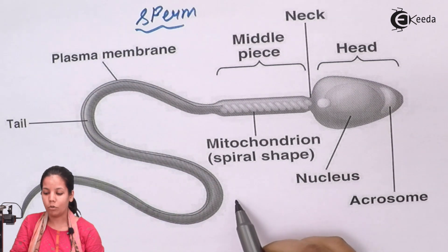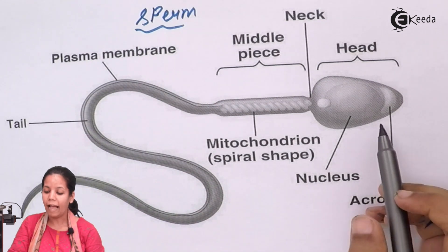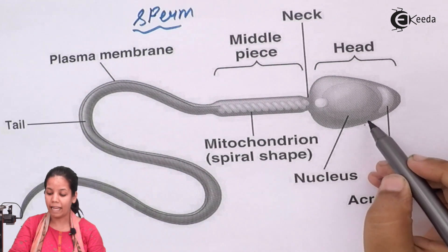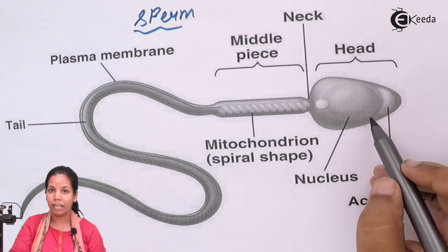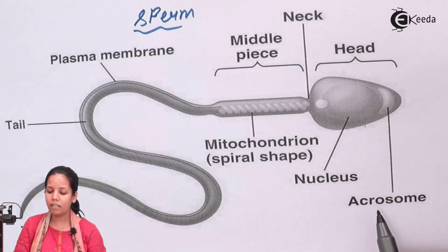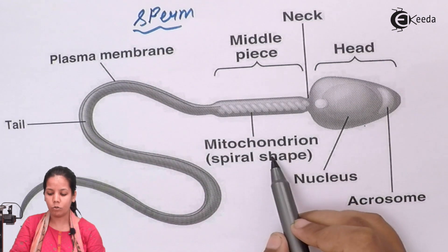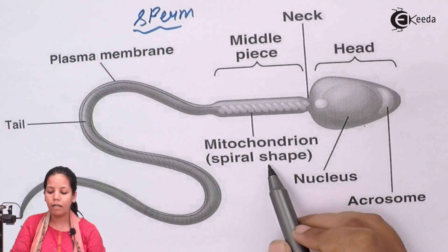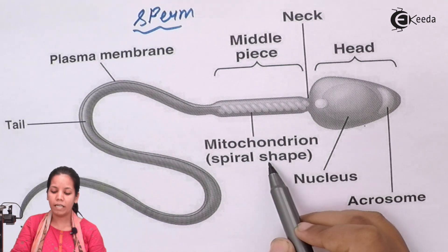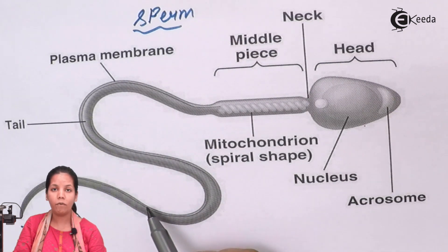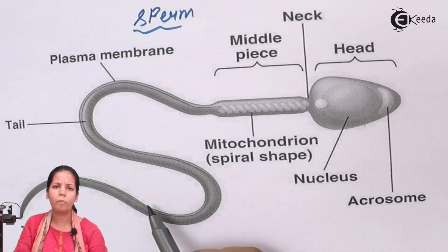The sperm has a head region, a middle piece, and an end region. The head region has the nucleus, which is the genetic material, and a region called the acrosome which has hydrolytic enzymes. The middle piece has mitochondria which is spirally coiled, providing energy to the sperm for movement, as well as the plasma membrane. The tail movements help in proper motility of the sperm, especially during copulation.